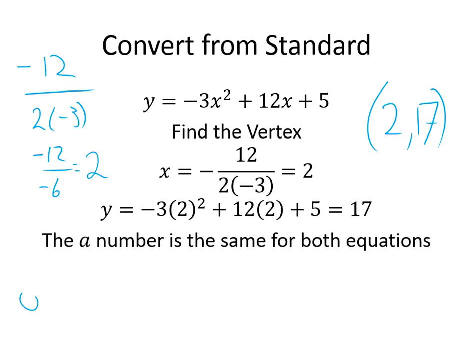And now here's the nice part with this. Instead of plugging another number in to find your A, your A value is the same as it is in the first one. So it would be negative 3 times X minus 2 squared plus 17. And there it is going from standard form into vertex form. So you find the vertex, and then the A stays the same, and then you just plug it in. Pretty simple.